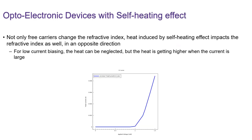However, not only do free carriers change the refractive index — the heat induced by self-heating effects impacts the refractive index as well, but in an opposite direction. For example, this is the IV curve for optoelectronic modulators.